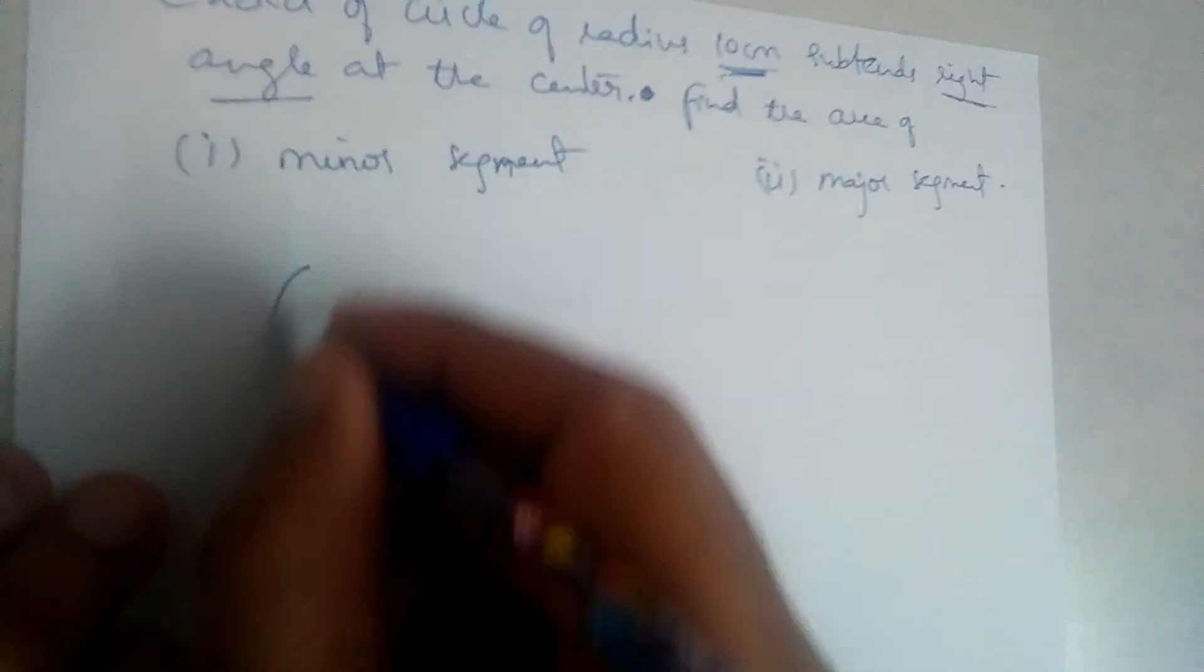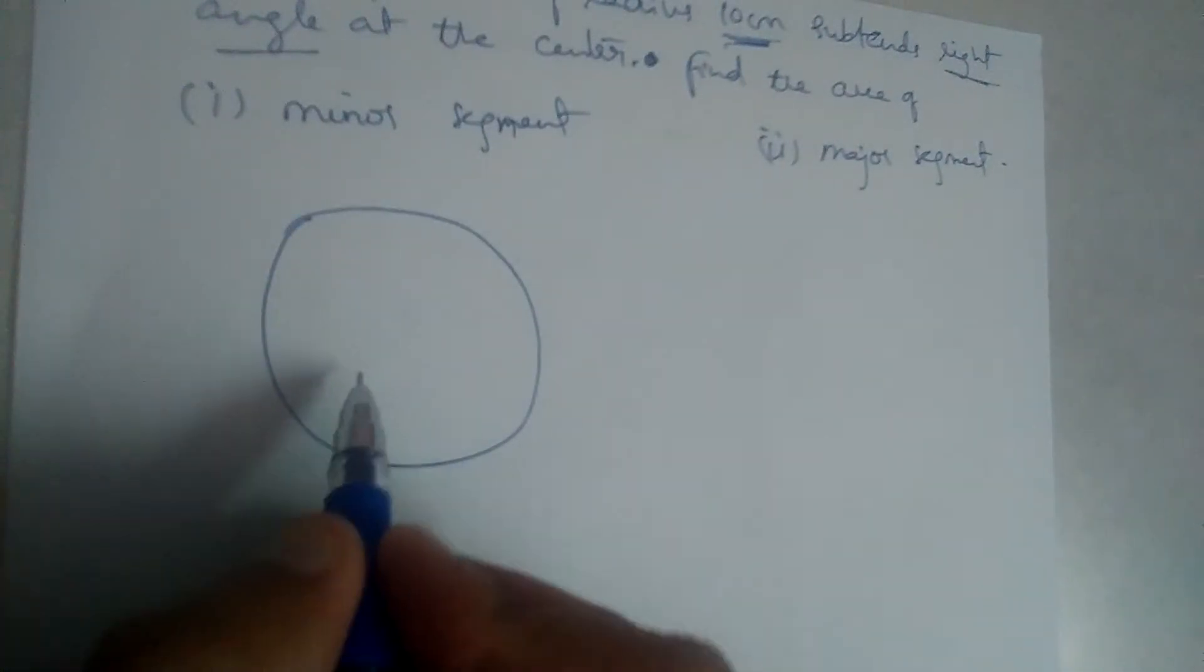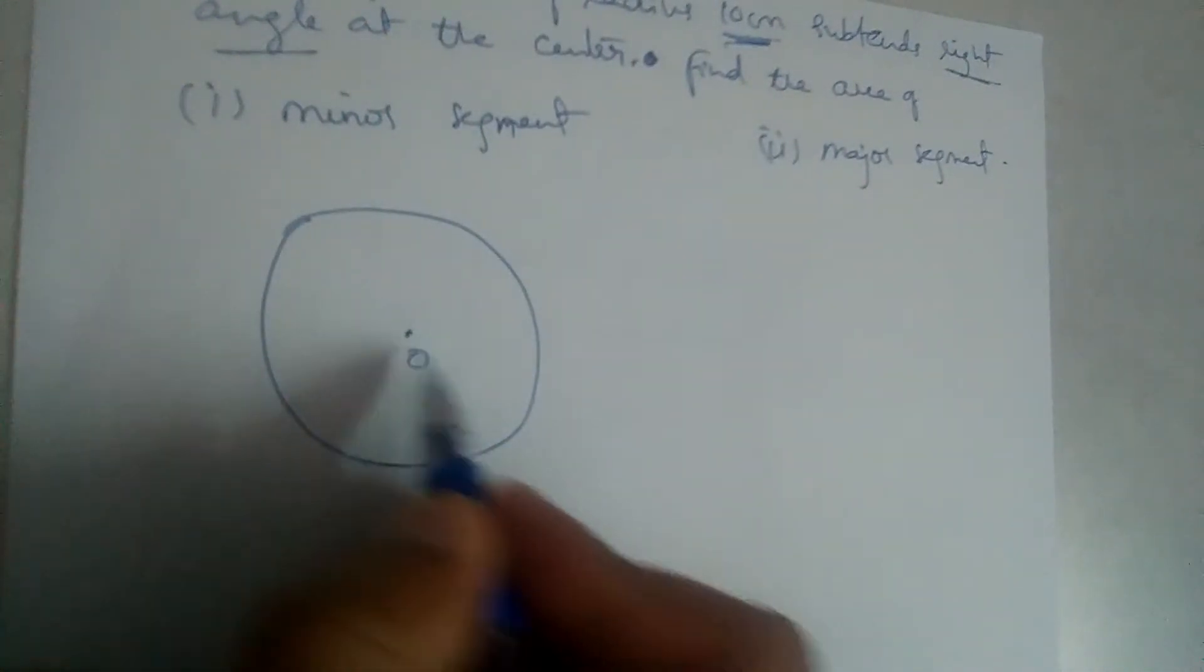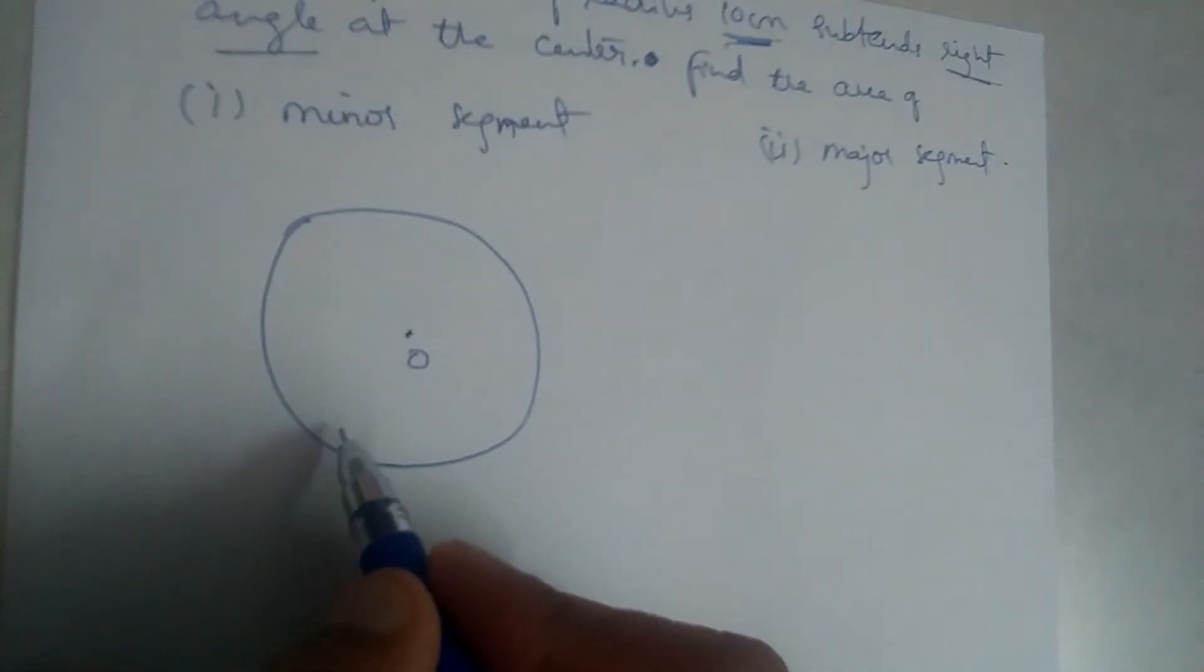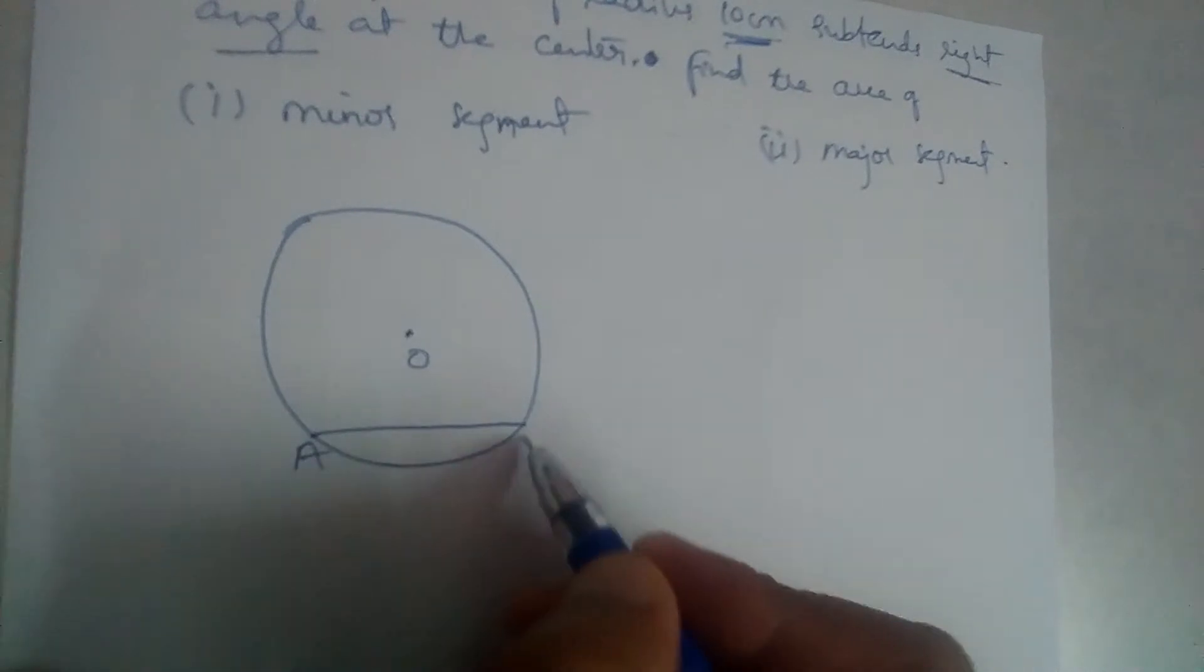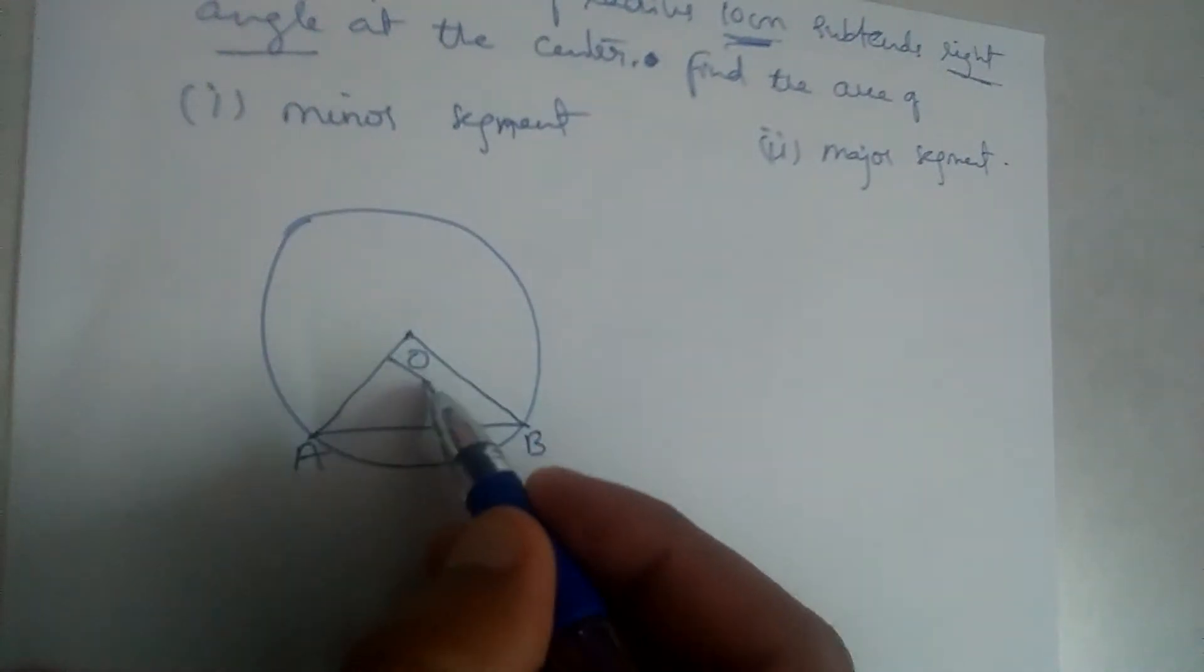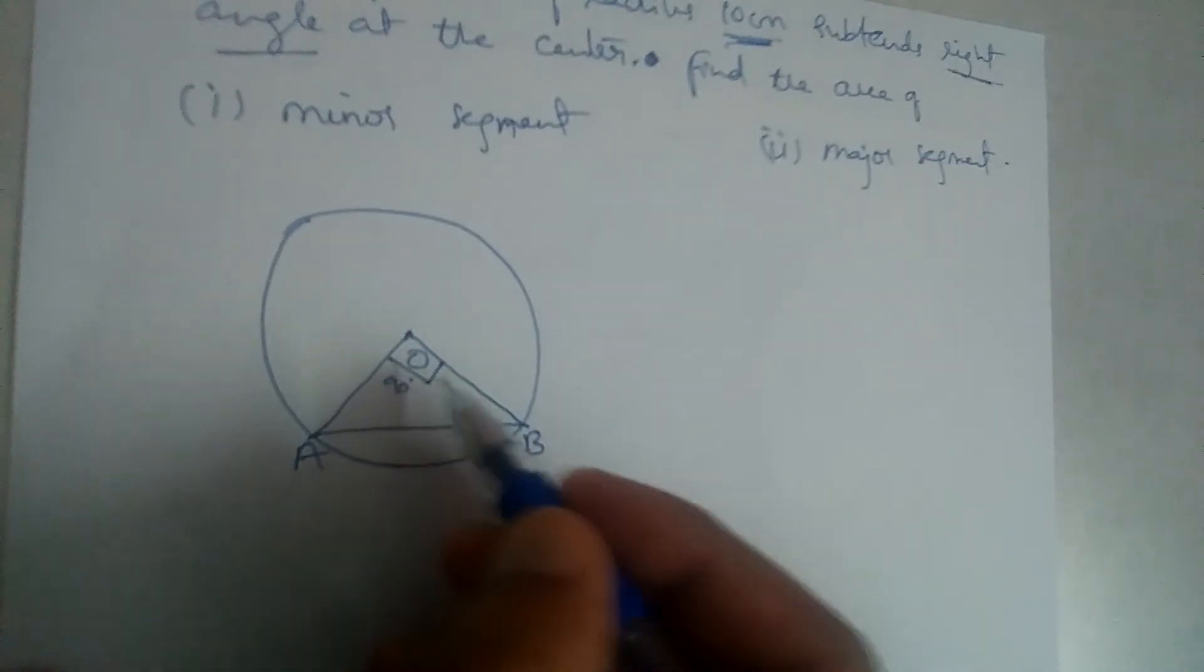So we have a circle. Let the center of the circle be O. And there is one chord. Let AB be the chord. And this chord is making angle 90 degrees at the center of the circle. So this is 90 degrees.